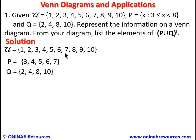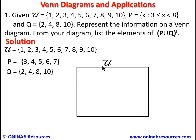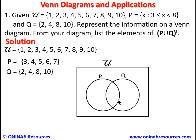To represent the information on a Venn diagram, we use a rectangle to represent the universal set and oval/circle shapes to represent P and Q. So we have the universal set as a rectangle, set P as one circle, and set Q as another circle.